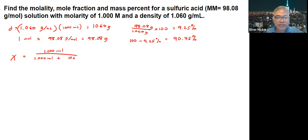So we're going to get here, 1060 minus 98.08 grams, and then we divide it with 18 grams per mole. And if we're going to do it, this would be equivalent to around 53.44 moles.